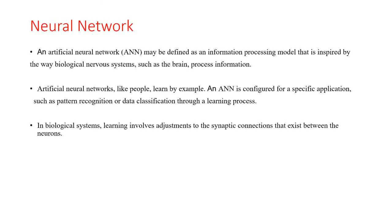A Neural Network is a processing device, either an algorithm or actual hardware, whose design was inspired by the design and functionality of animal brains and components thereof. The computing world has a lot to gain from Neural Networks, also known as Artificial Neural Networks or Neural Nets. Neural Networks have the ability to learn by examples, which makes them very flexible and powerful. For a Neural Network, there is no need to devise an algorithm to perform a specific task — that is, no need to understand the internal mechanism of any task. These networks are also well suited for real-time systems because of their fast response and computational times due to their parallel architecture.